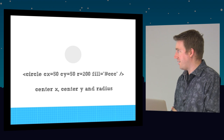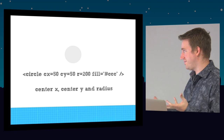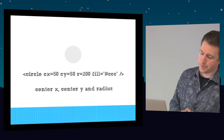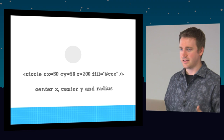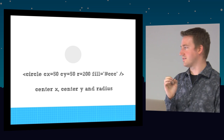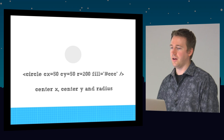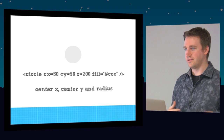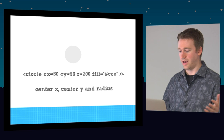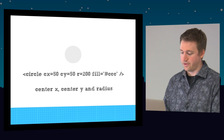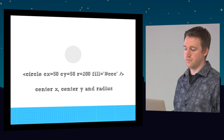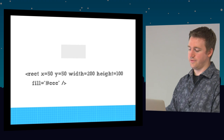With the circle element you've got cx and cy — that's where the center of the circle starts, center x and center y — and then r is the actual radius. So if the radius is 200, the diameter is 400. And then you get attributes like fill, where you just specify a color.